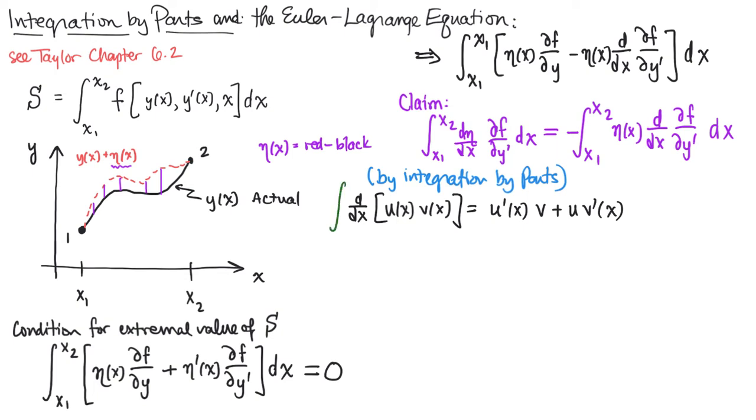We could then choose to integrate both sides of this equation. And this would be a definite integral from, say, x1 to x2. Like so, dx.